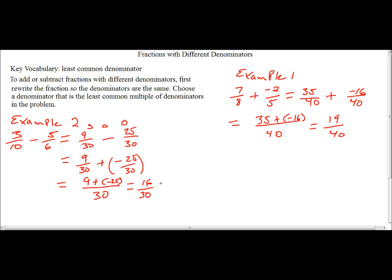It's a negative because 25 is larger. Let's try to reduce it. Definitely know we can reduce it because they're both even numbers. Let's try 2, and we'll get a negative 8 here at the top and 15 at the bottom. Now, no factors in common. So that would be our answer.